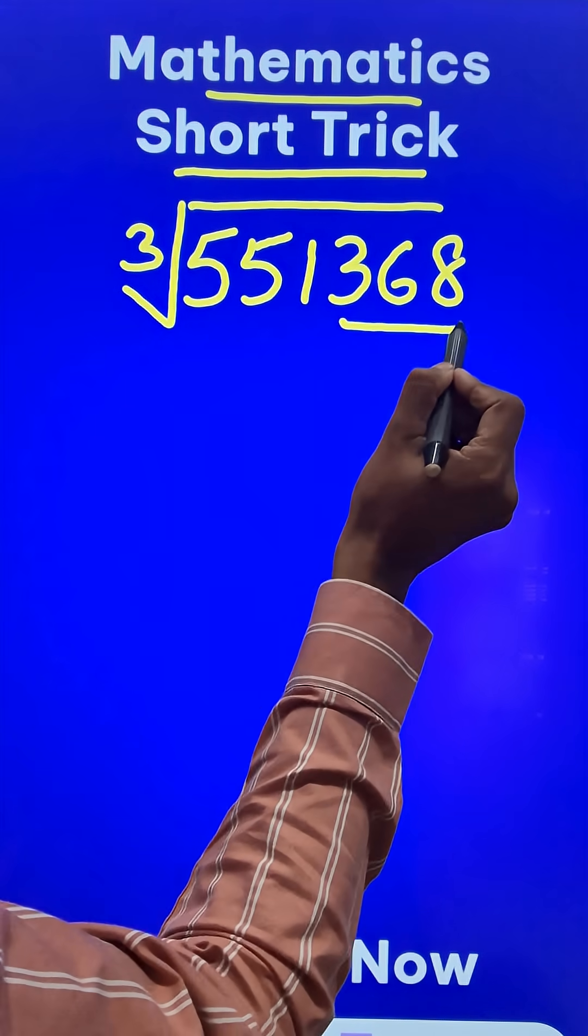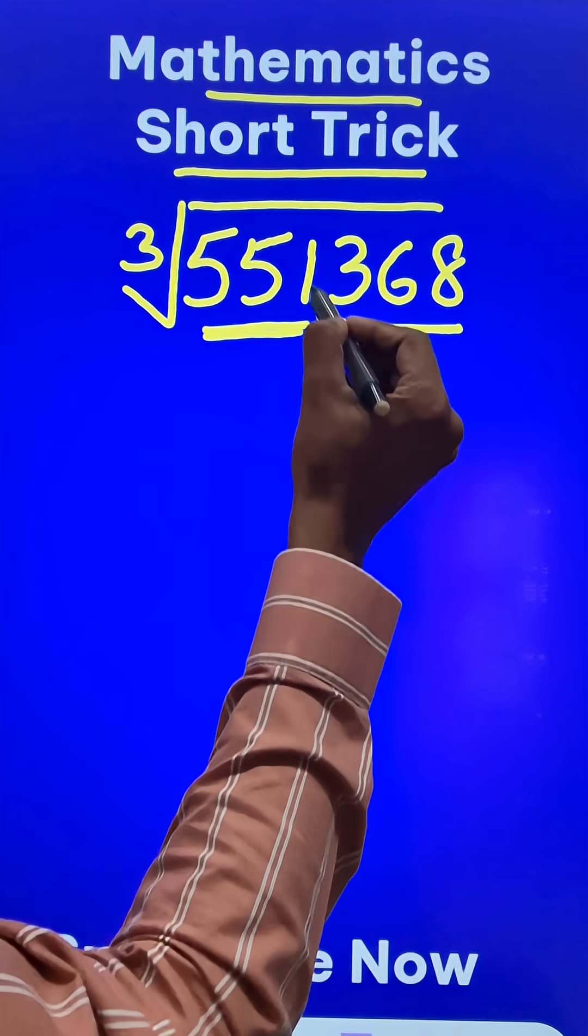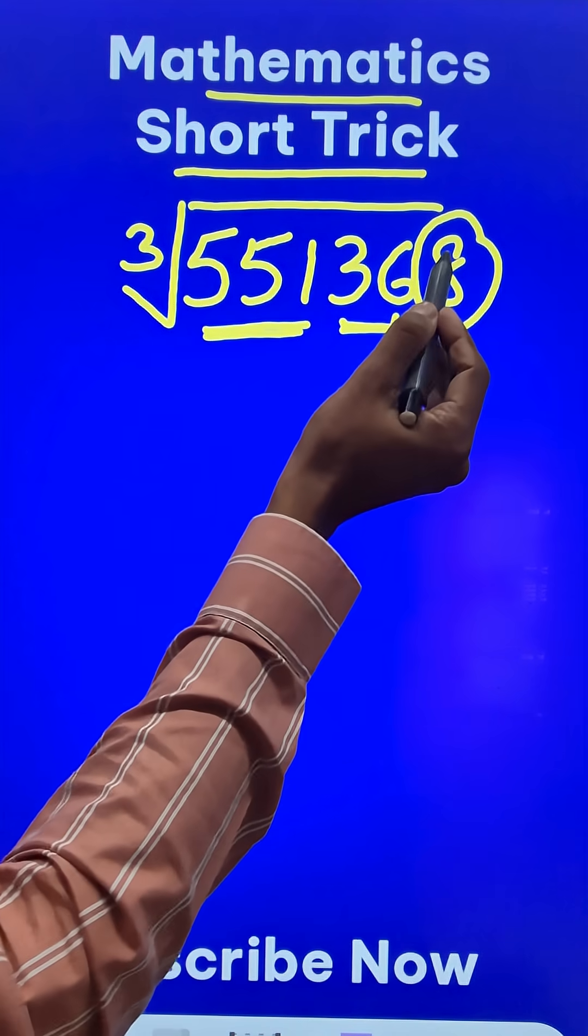So make triples from the right hand side: 368 forms a triple and 155 forms a triple. Now what is the use of 368? You just have to watch the unit digit of this triple, that is 8.